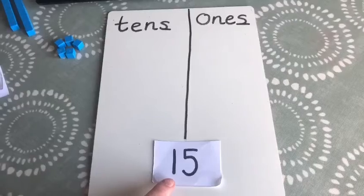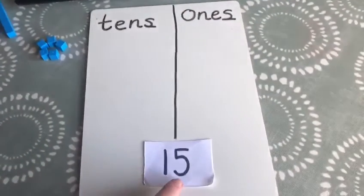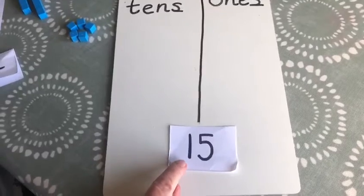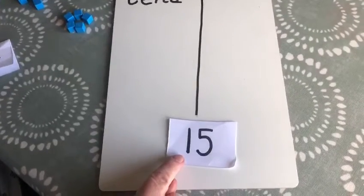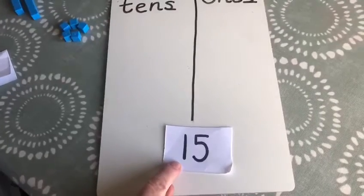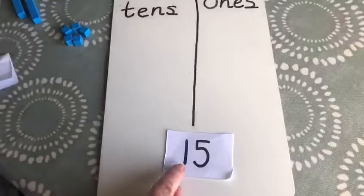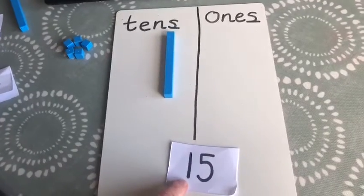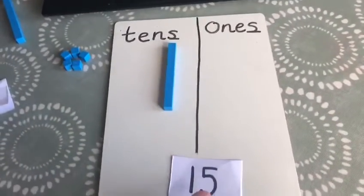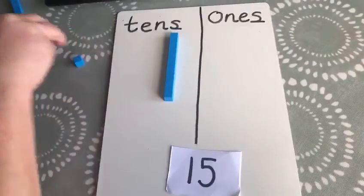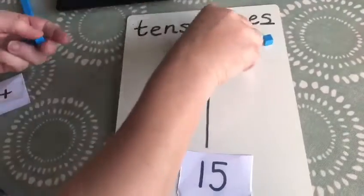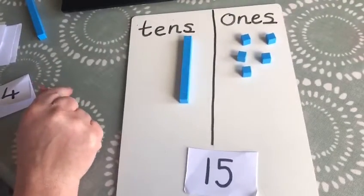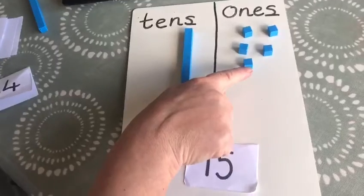I've got a two-digit number here which is the number 15, and 15 is written with a 1 and then a 5. Remember, we read the number from left to right. I wonder if you can tell a grown-up near you — what does that 1 represent? Is it 1 ten or 1 one? The first digit represents the number of tens in the number, and this number 15 has one stick of 10. And the 5 represents the 5 ones: 1, 2, 3, 4, 5. So here is the number 15 — one stick of 10 and 5 ones.